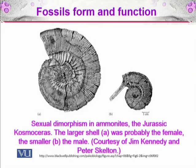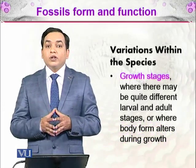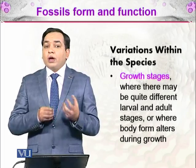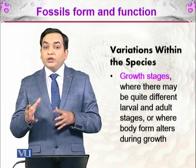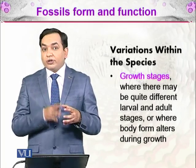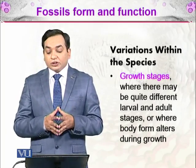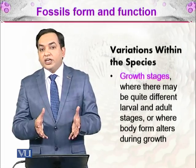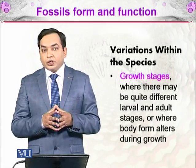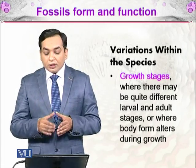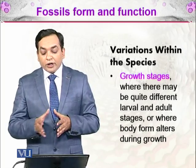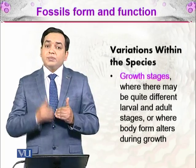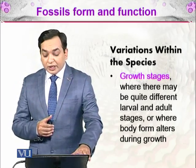Another source of variation within species is growth stages. Growth stages occur as an embryo develops into an adult organism; in between, it has different forms and structures that also differentiate specimens of the same species. Growth stages include quite different larval and adult stages, or cases where body form alters significantly during growth. As an organism grows it passes through different life forms.